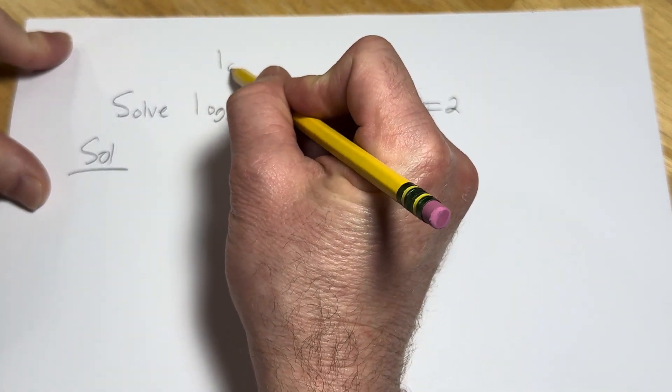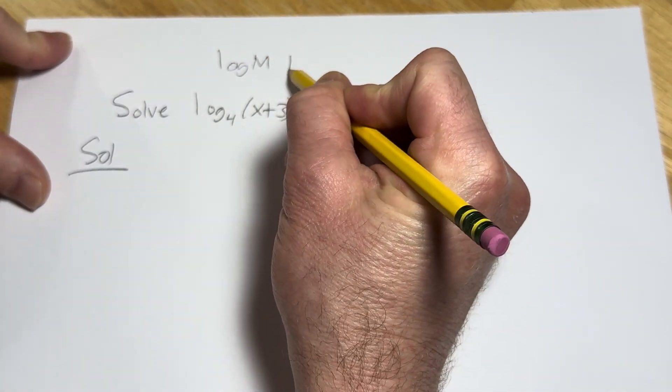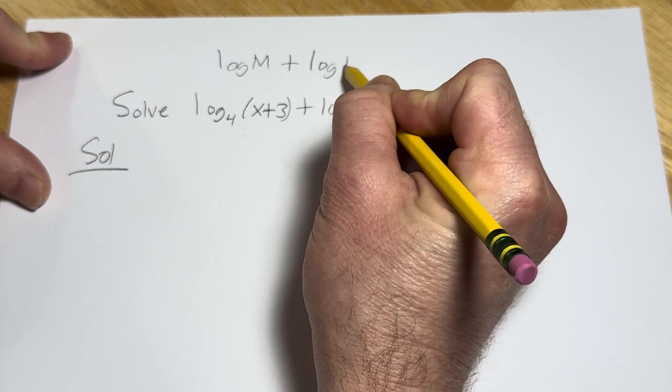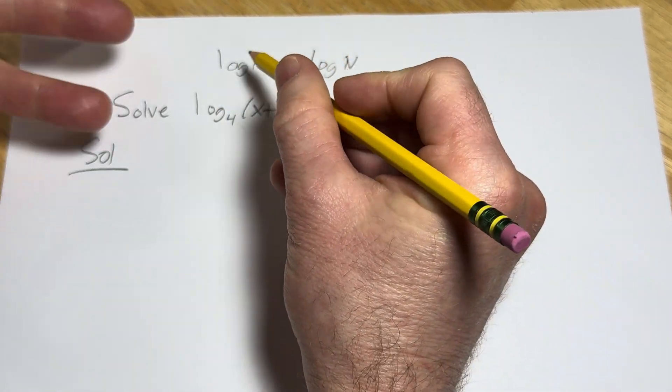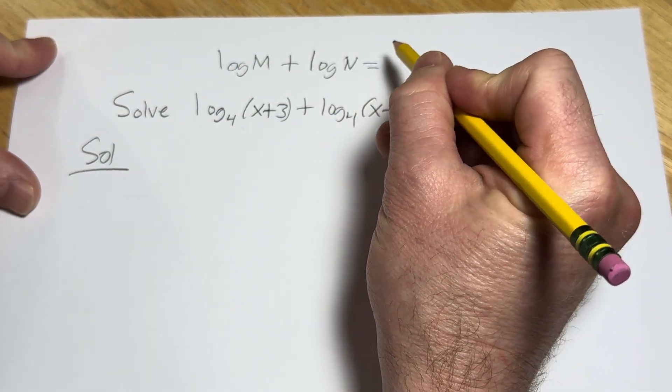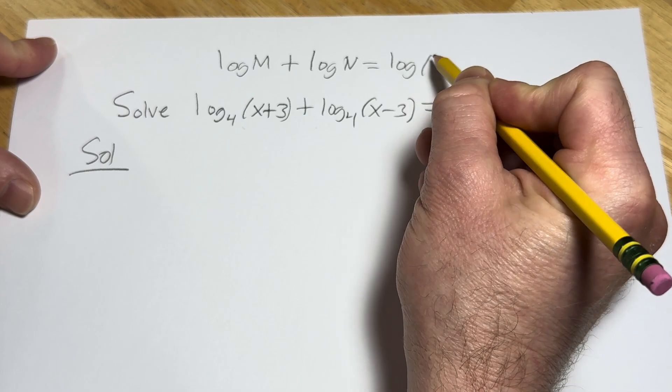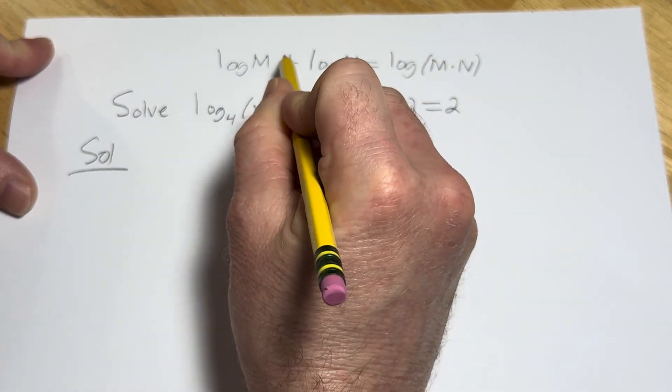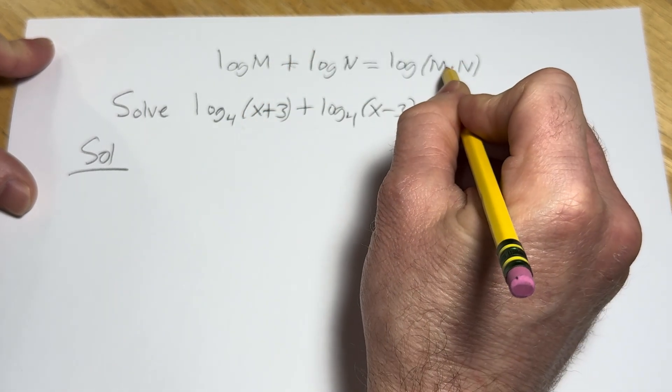The product rule for log says if you have the log of m plus the log of n, and the base doesn't matter here so I just left it as log, this is equal to the log of m times n. So the addition turns into multiplication.